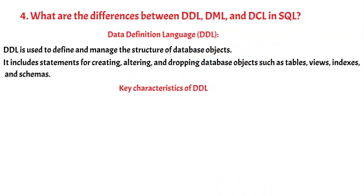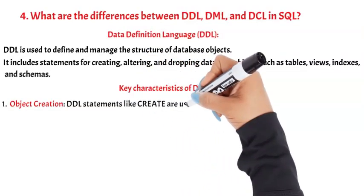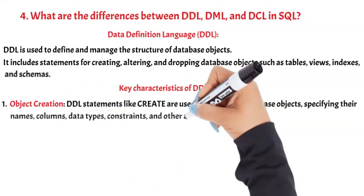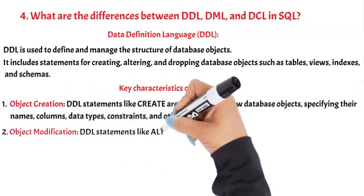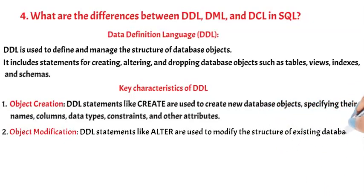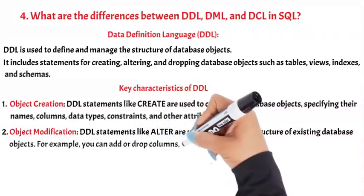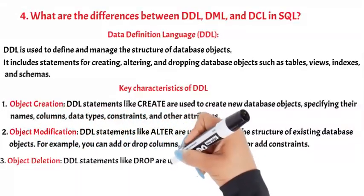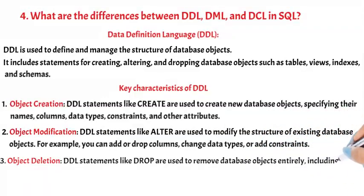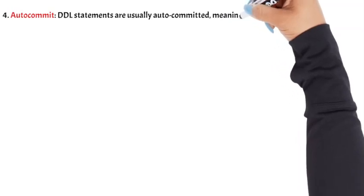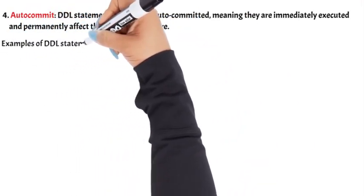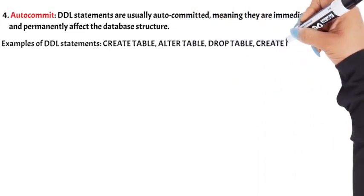Key characteristics of DDL: 1. Object creation — DDL statements like CREATE are used to create new database objects, specifying their names, columns, data types, constraints, and other attributes. 2. Object modification — DDL statements like ALTER are used to modify the structure of existing database objects; for example, you can add or drop columns, change data types, or add constraints. 3. Object deletion — DDL statements like DROP are used to remove database objects entirely, including tables, views, indexes, or schemas. 4. Autocommit — DDL statements are usually autocommitted, meaning they are immediately executed and permanently affect the database structure. Examples of DDL statements: CREATE TABLE, ALTER TABLE, DROP TABLE, CREATE INDEX, CREATE VIEW.